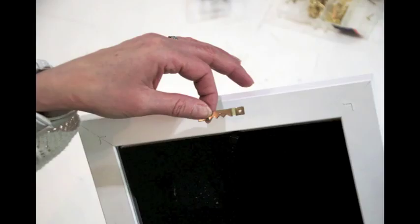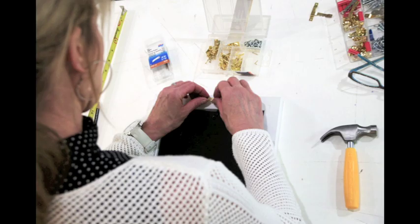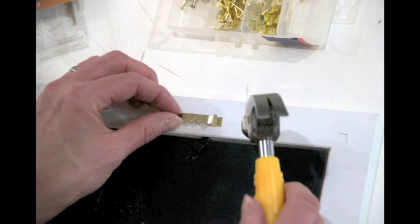Align the middle of the sawtooth hook with the mark you just made. Some sawtooth hooks even have a notch in the center to make this step easier.